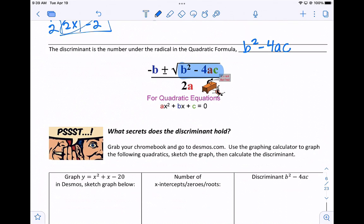So grab your Chromebooks and go to desmos.com. Use the graphing calculator to graph the following quadratics. Sketch the graph, and then calculate the discriminant.